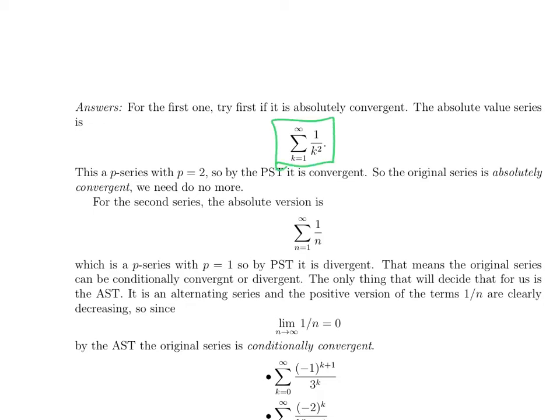Sum from k=1 to infinity of 1/k^2. And you say, oh, that's a p-series. It's a p-series with p=2, so it's convergent. By now, recognizing a p-series and recognizing when it converges should start to be pretty smooth for you.